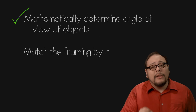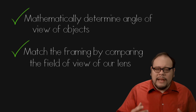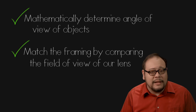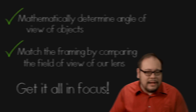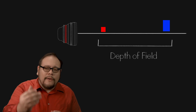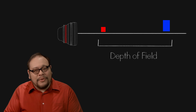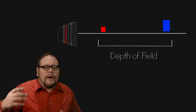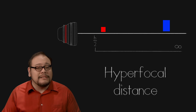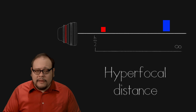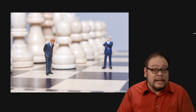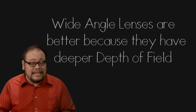Now we know how to mathematically determine the angle our objects cover and how to match the framing using focal length and sensor size. Now we get to the most challenging aspect: focus. We have to find a focus point and aperture setting that will create a depth of field where both our near object and our far away object are both sharp and in focus. For very large subjects very far away, like these leaning tower of Pisa images, we could utilize the hyperfocal distance, which puts everything from half the hyperfocal distance to infinity in focus. But hyperfocal distance won't work on miniatures placed close to the camera. There's one rule of thumb: wide angle lenses work better because they have a deeper depth of field than telephoto lenses given the same aperture settings.